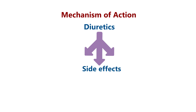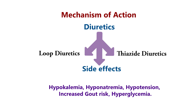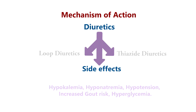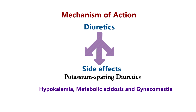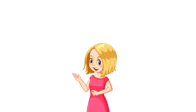Side effects of loop and thiazide diuretics include hypokalemia, hyponatremia, hypotension, increased gout risk, and hyperglycemia. Side effects of potassium sparing diuretics include hyperkalemia, metabolic acidosis, and gynecomastia. The next topic is coming soon — stay tuned.